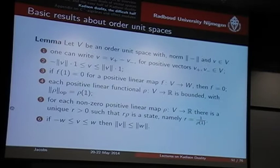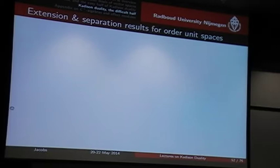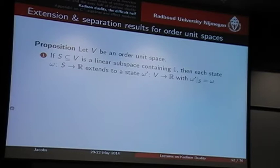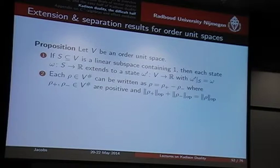The final property is that if the vector V is squeezed between minus W and plus W, then the norms are ordered in an appropriate way. All well-behaved properties, but the interesting thing is that they hold in these relatively weak structures. Stronger properties can be obtained using Hahn-Banach-style results: if I have a linear subspace and a state on this linear subspace — requiring that one is in the subspace — then this state can be extended to the whole space. And each functional can be written as a difference of two positive maps. I showed this only for vectors on the previous slide, but it actually holds for functionals. This is, of course, what I will use in a minute.